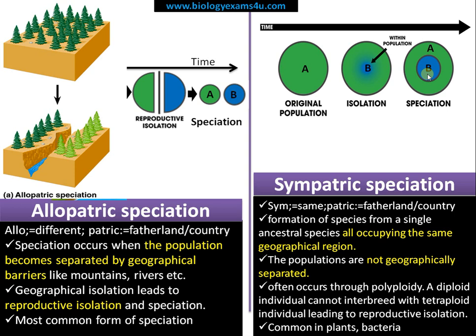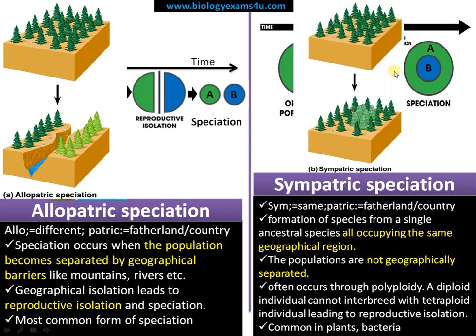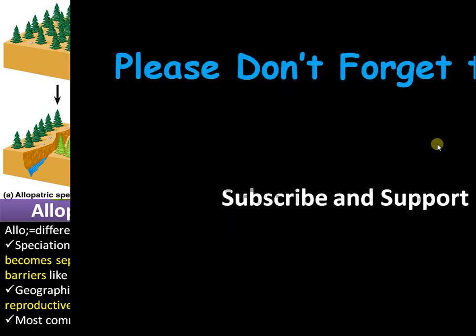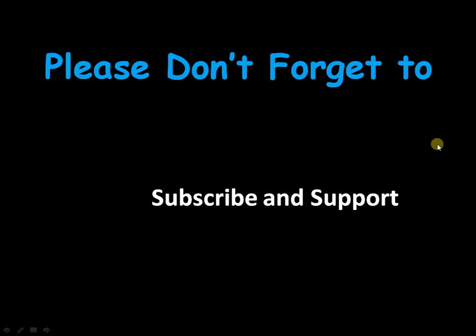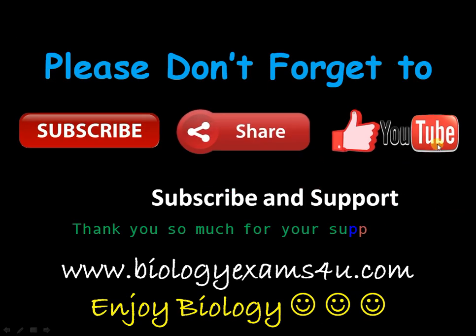This is very common in plants and bacteria. In this picture, you can see population A, and within the population a sub-population is formed without any geographical separation — that is why it is called sympatric, or formation of species within the same geographical area. Hope things are clear. Thank you so much for your support.